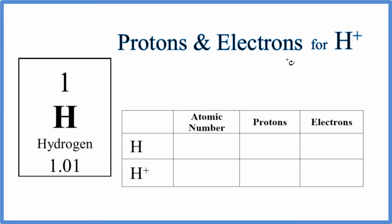In this video, we'll find the protons and electrons for H+, the hydrogen ion. The first thing we should do is find the protons and electrons just for neutral hydrogen. That's the hydrogen we find on the periodic table. We know it's neutral because there's no negative or positive sign after it. All the elements on the periodic table are neutral.